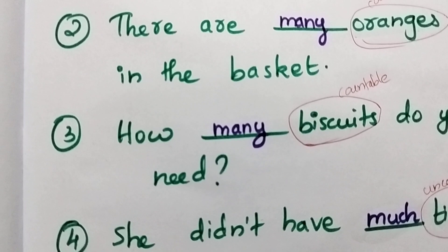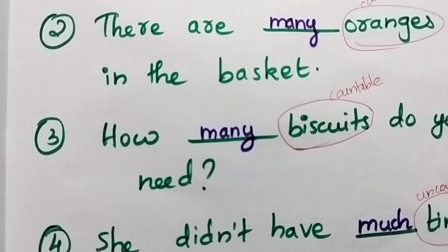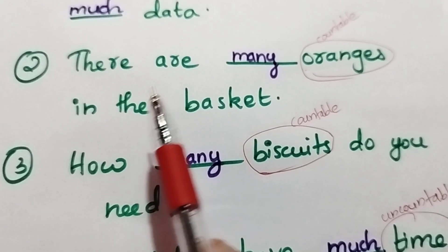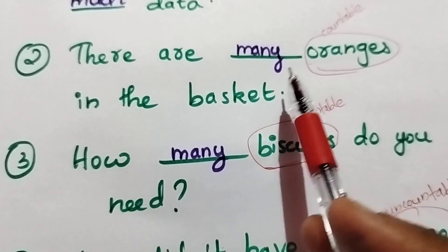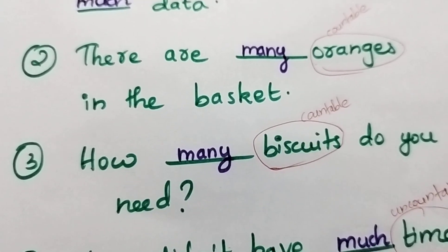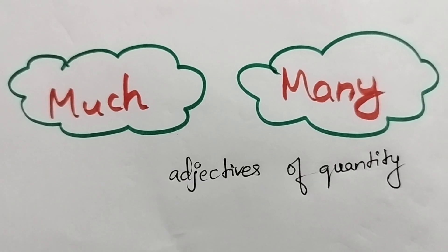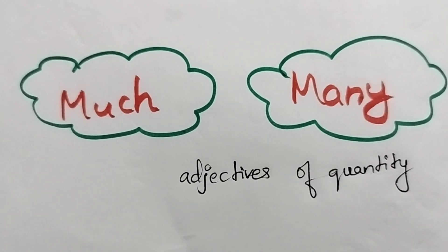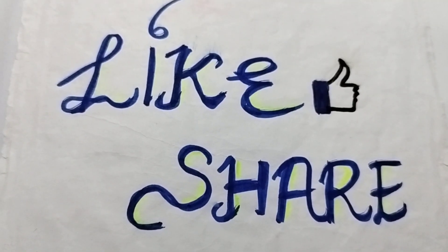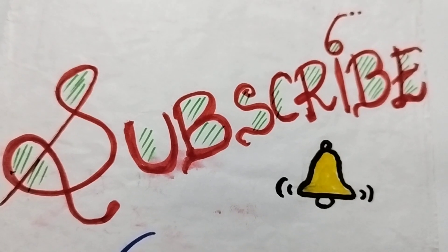'Many' is also used in interrogative sentences, but it is also used in positive or affirmative sentences as well. For example, 'There are many oranges in the basket' is an affirmative sentence. This is the main role of much and many in English grammar. Hope you liked the video — if it was useful, kindly subscribe to my channel. Thank you.